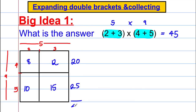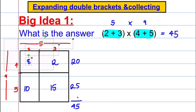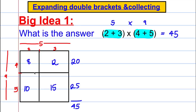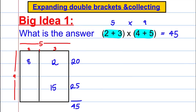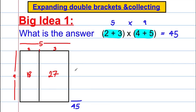Another way: if I just partition across the top without the box, I can say 9 multiplied by 2 equals 18, and 3 multiplied by 9 equals 27, and again these add to 45.